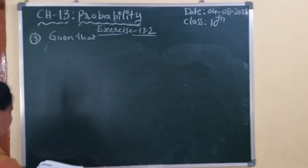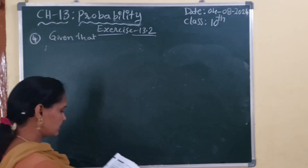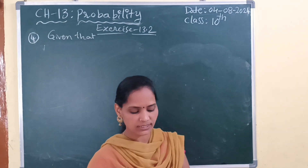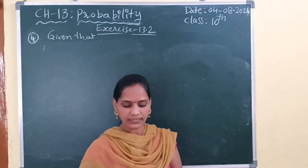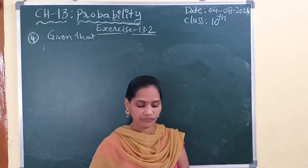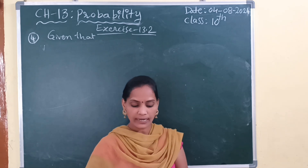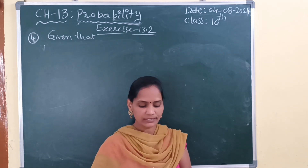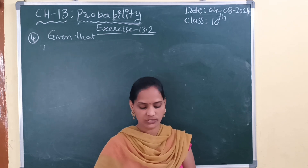Next, the fourth question. Gopi buys a fish from a shop for his aquarium. The shopkeeper takes out one fish at random from a tank containing 5 male fishes and 8 female fishes. What is the probability that the fish taken out is a male fish?